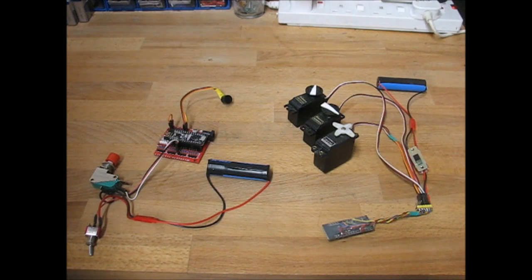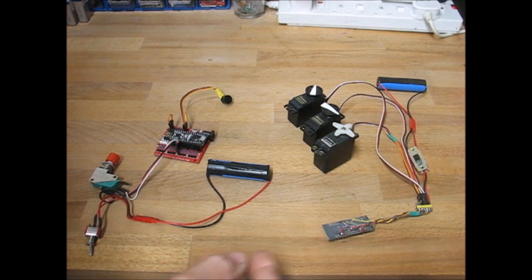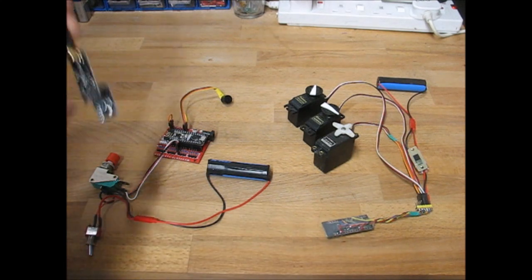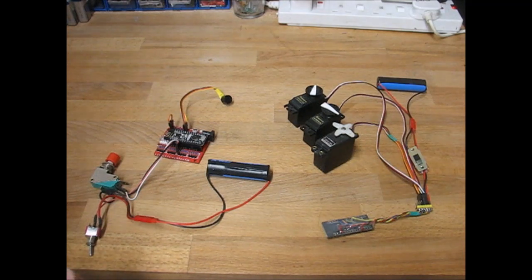This uses the NRF24 modules that you buy from eBay really cheaply, or for the receiver it uses the RF Nano which is the same thing, an Arduino Nano with one of these receivers on board all integrated so it's really handy and really cheap as well.